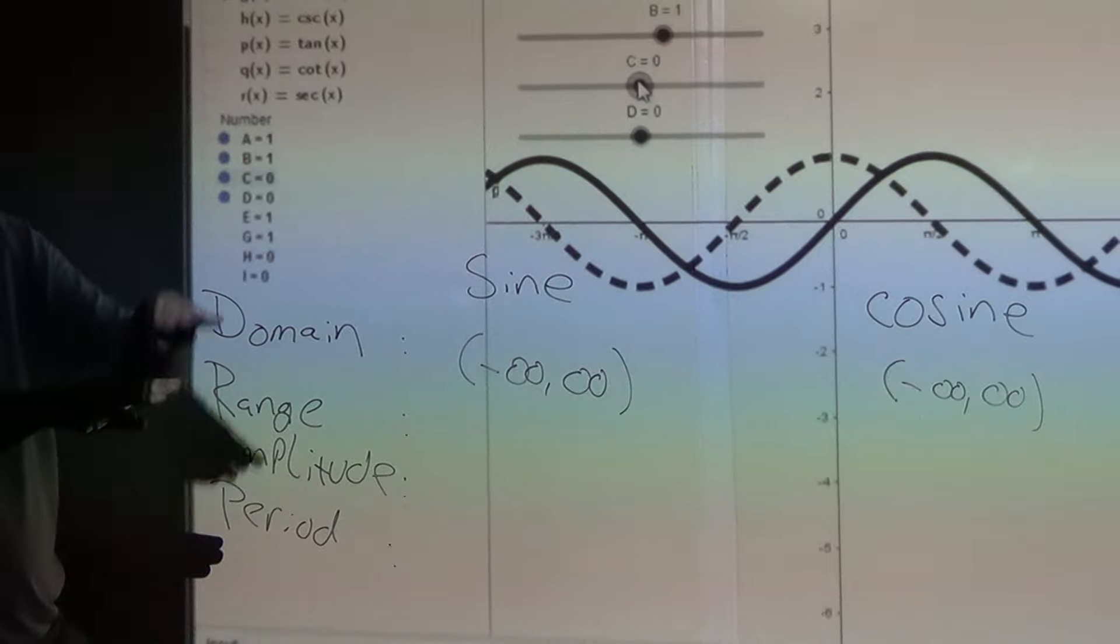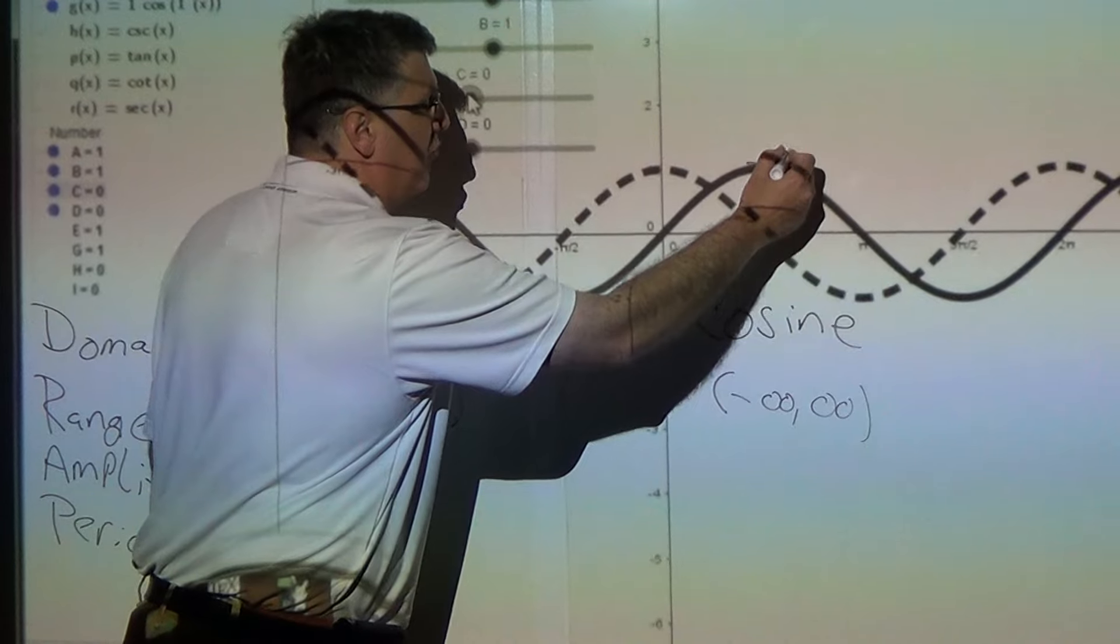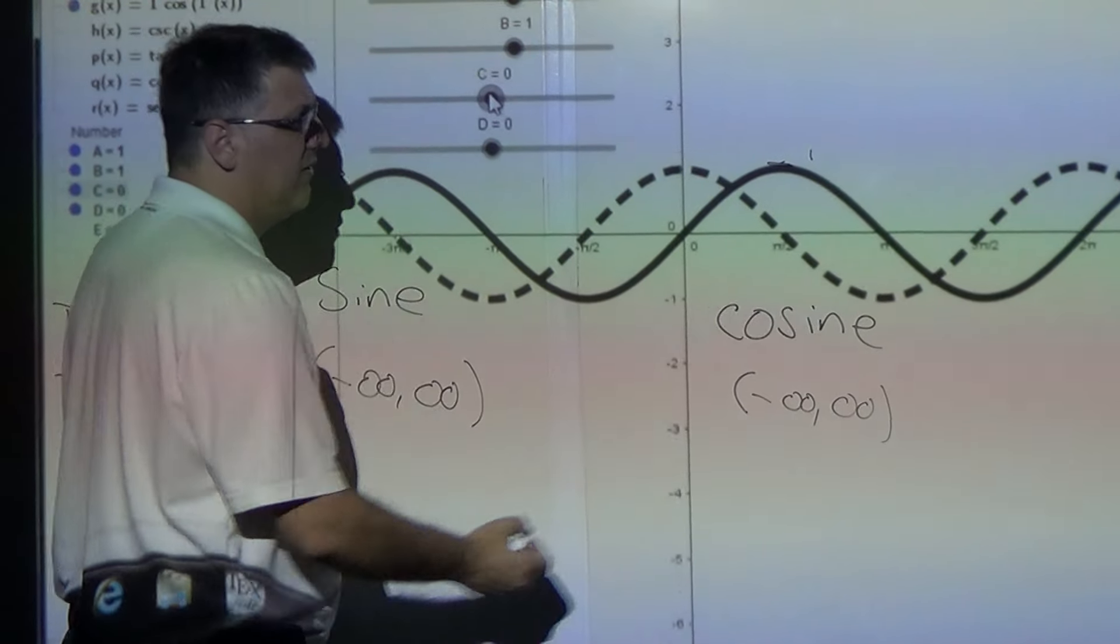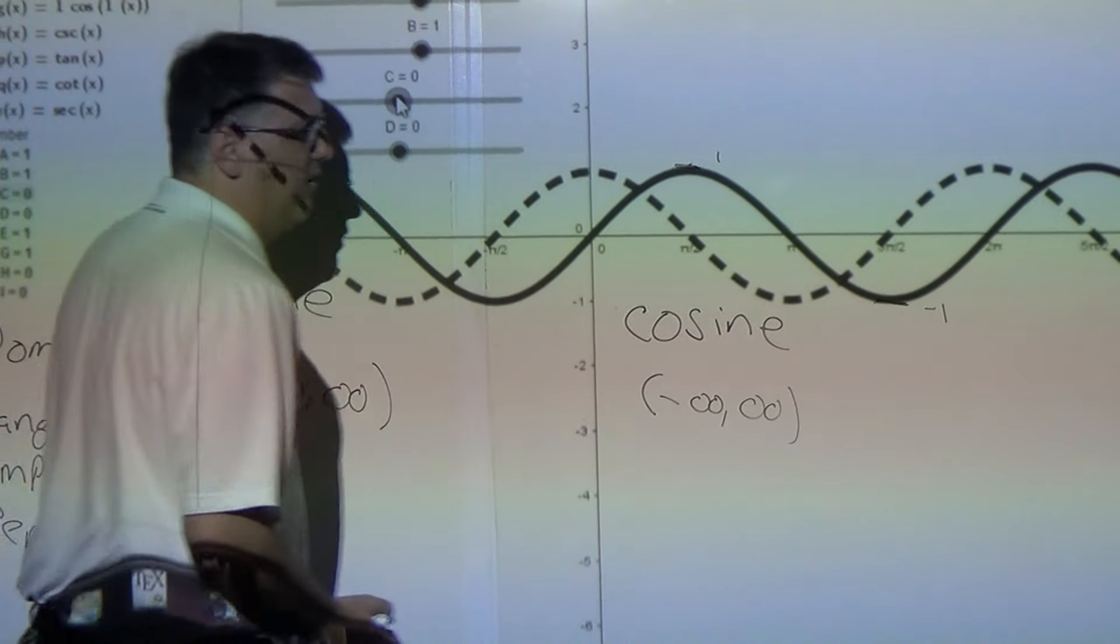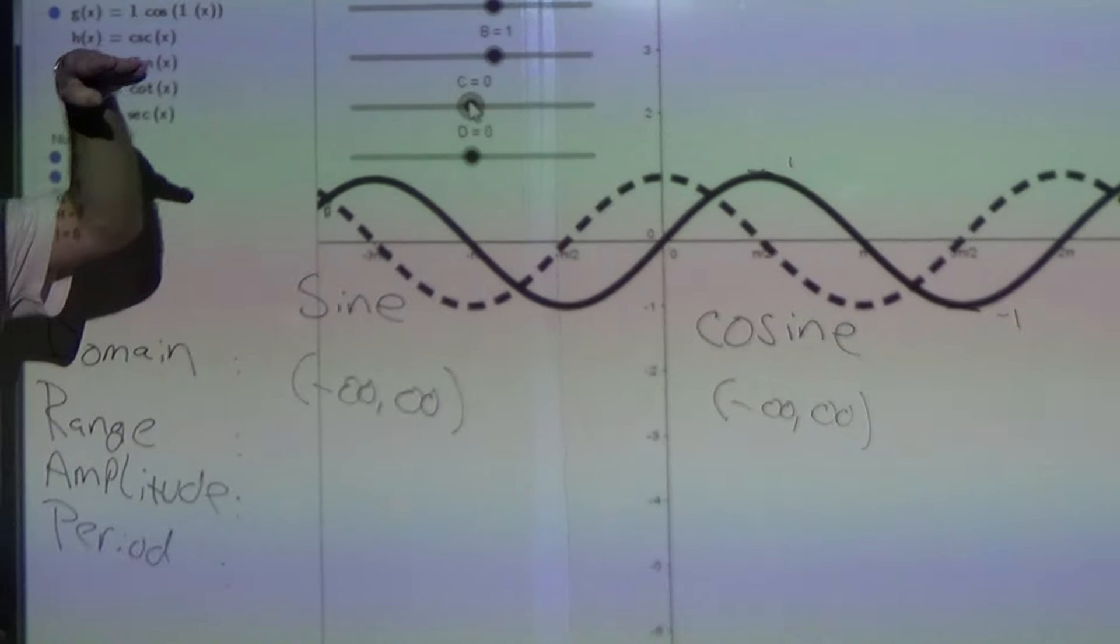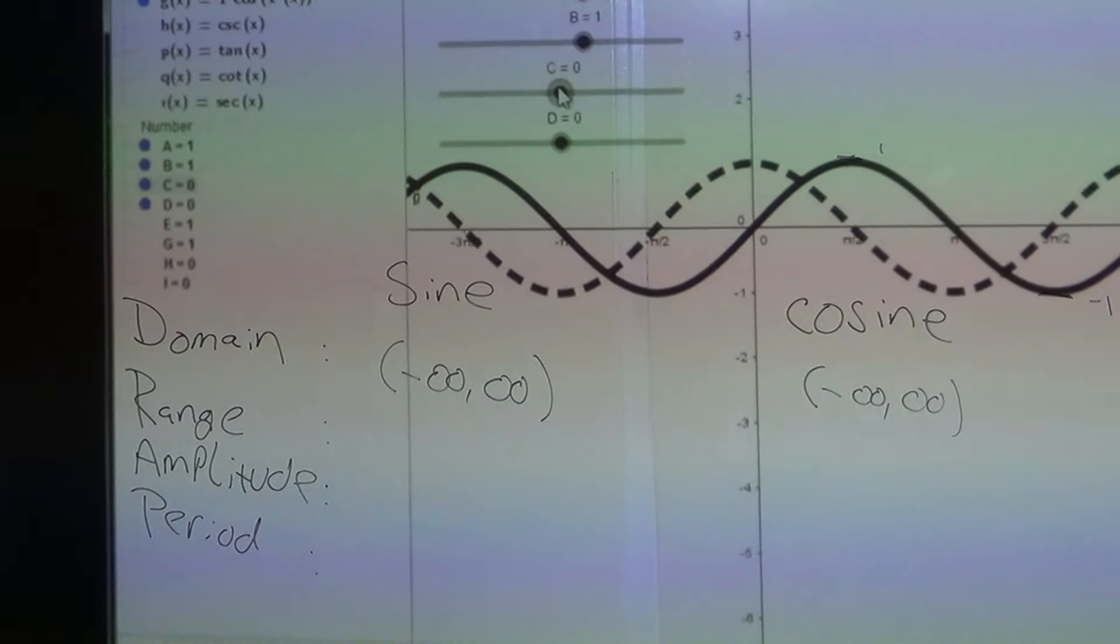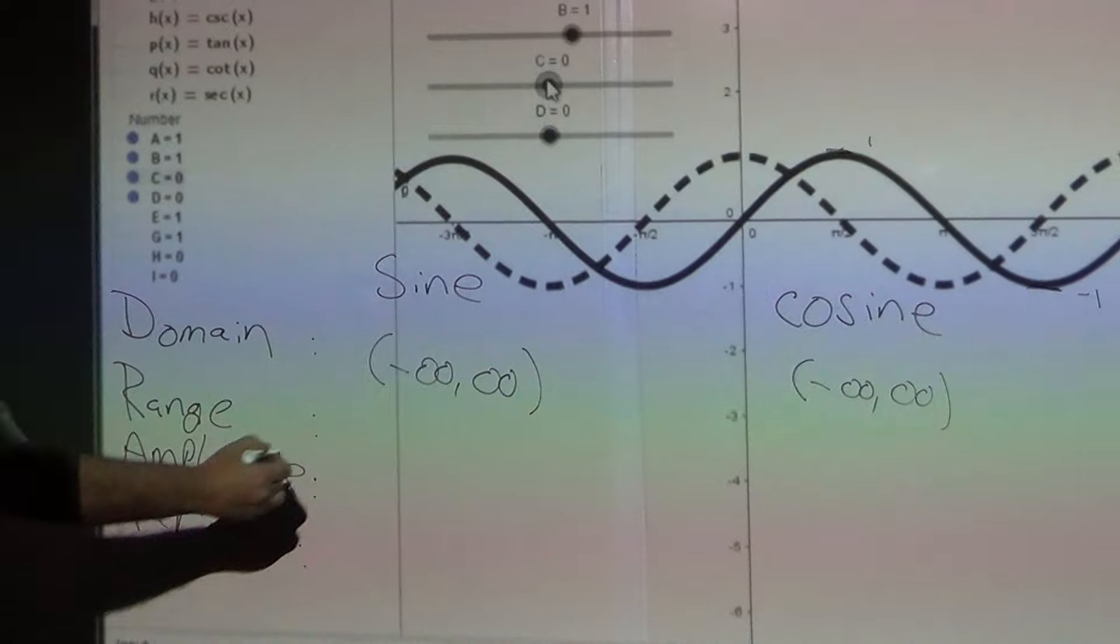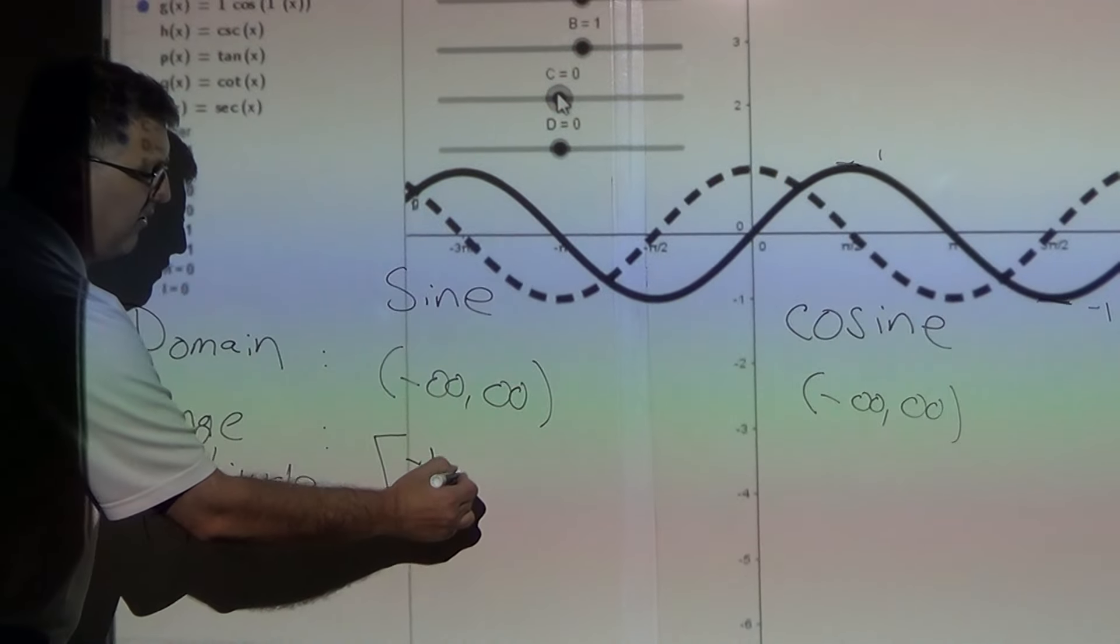The range is, how tall is it? Well, right here for sine, the maximum height is 1. Down here, this is negative 1. So it's as low as negative 1 and it goes all the way up to 1 and it touches them. So the way we express interval notation for sine, because it touches 1, we're going to use a square bracket, negative 1, comma 1.